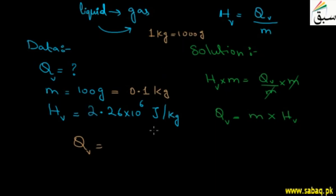100 divided by 1000 gives 0.1 kg. So we input 0.1 kg, and the value of HV is 2.26 × 10^6 joules per kg.